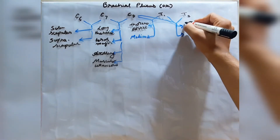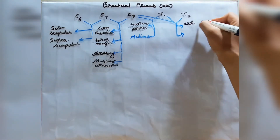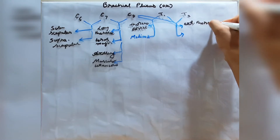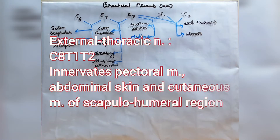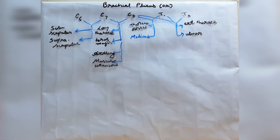C8, T1, and T2 give rise to two nerves. The first is the external thoracic nerve, which supplies the pectoral muscles, cutaneous muscles, the abdominal skin, and the cutaneous muscles of the scapulohumeral region. The ulnar nerve, formed from this group, I will also discuss later.